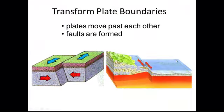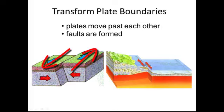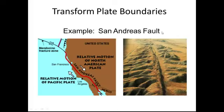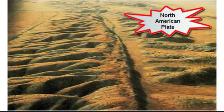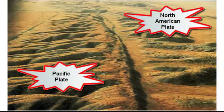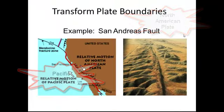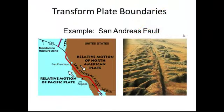Our last type is a transform plate boundary. Simply put, that's when two plates slide past each other side by side. The most famous example is the San Andreas Fault. You can see one side on the right is on one plate, and the side on the left is on another plate. It's on the west coast of California, running right through the state.